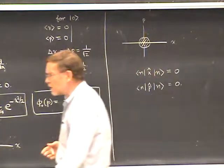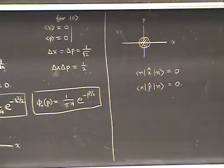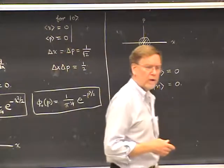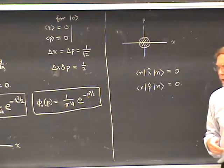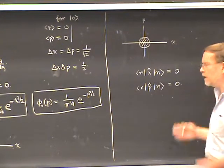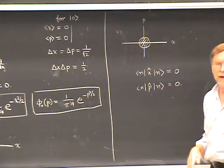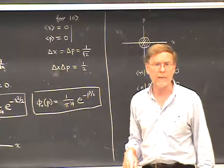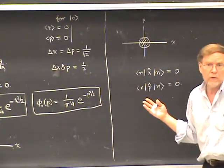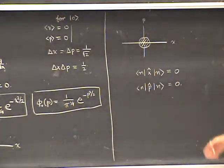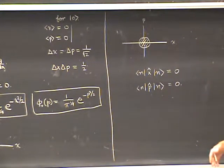Energy eigenstates in quantum mechanics are what are called stationary states — the probability density in configuration space is independent of time. Any expectation value of any operator is independent of time in an energy eigenstate, so there is no time evolution at all. In particular, the expectation values of X and P stay zero for all time, which is disappointing if you're trying to make a connection to the classical orbit.